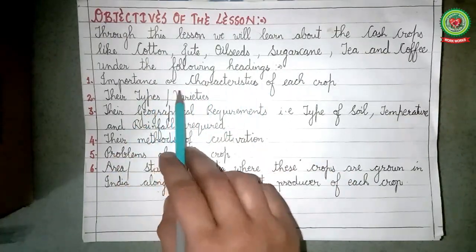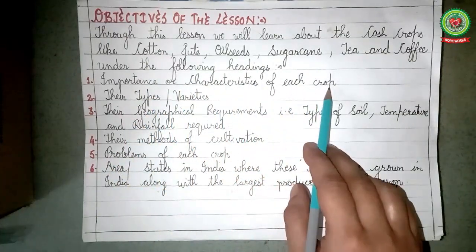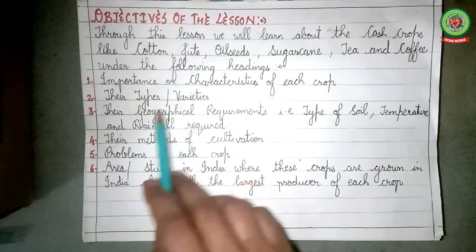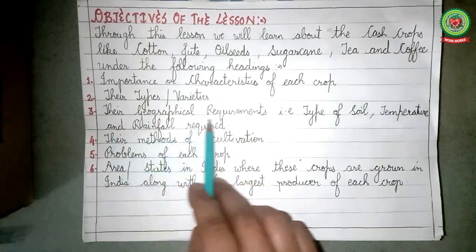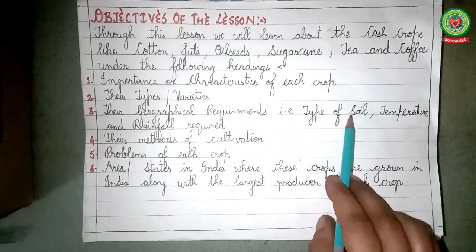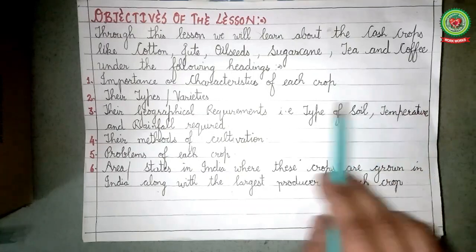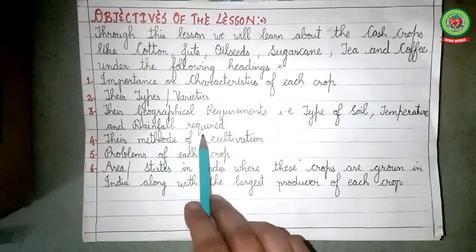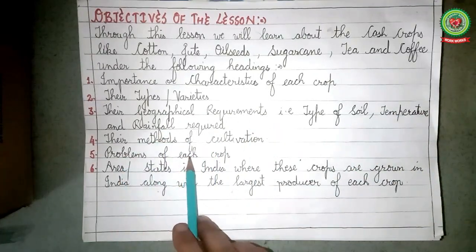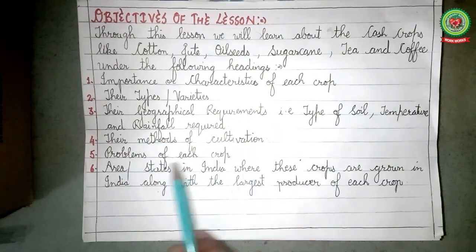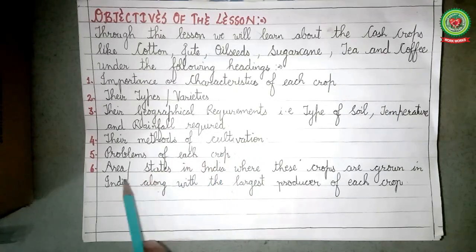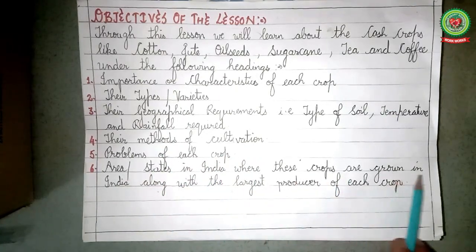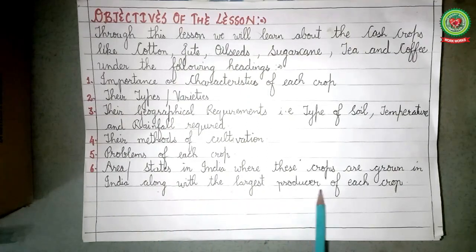We will cover the importance and characteristics of each crop, their types and varieties, geographical requirements such as type of soil, temperature and rainfall required, methods of cultivation, problems of each crop, and the area and states where these crops are grown in India, along with the largest producer of each crop.